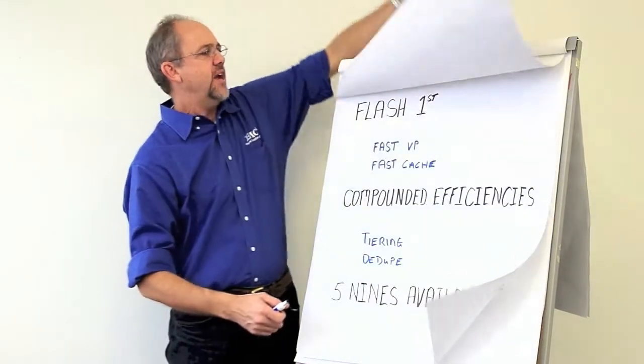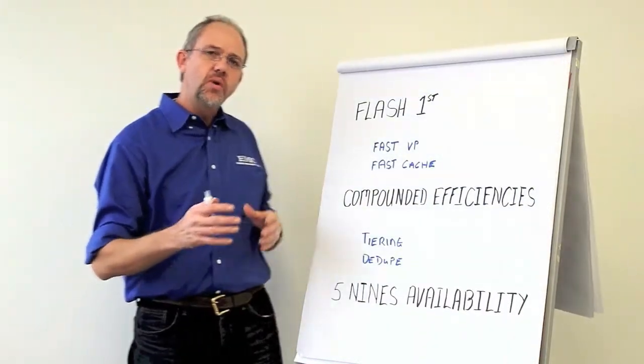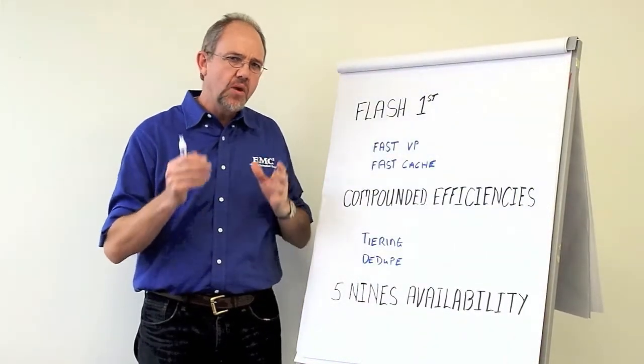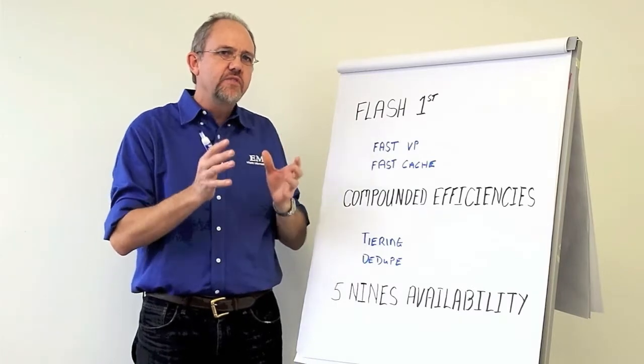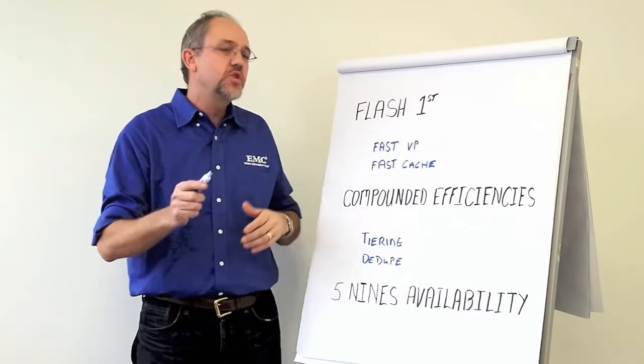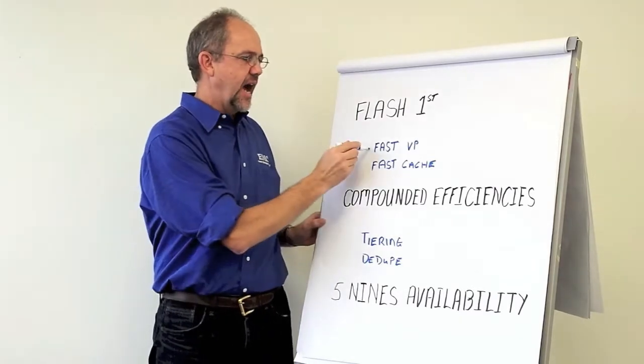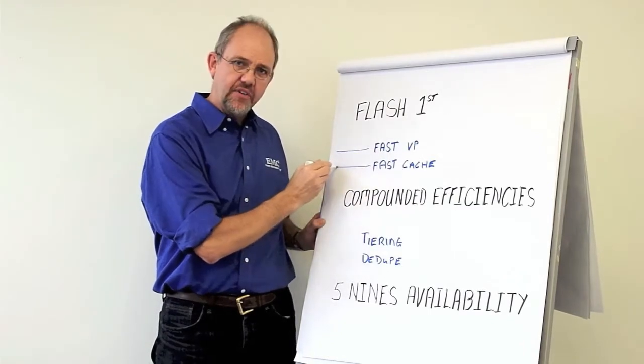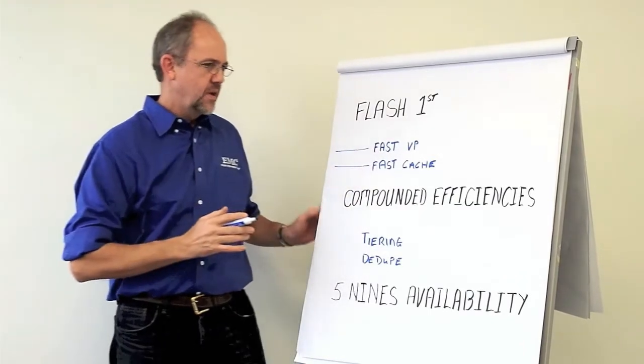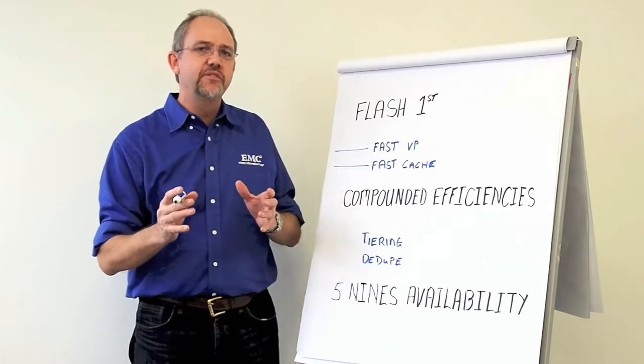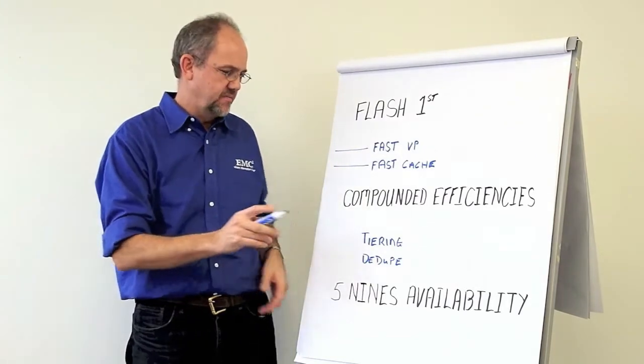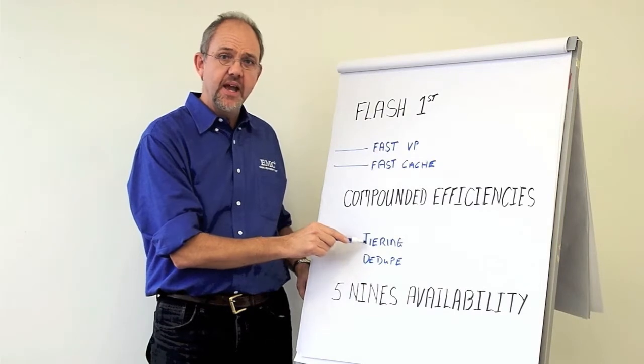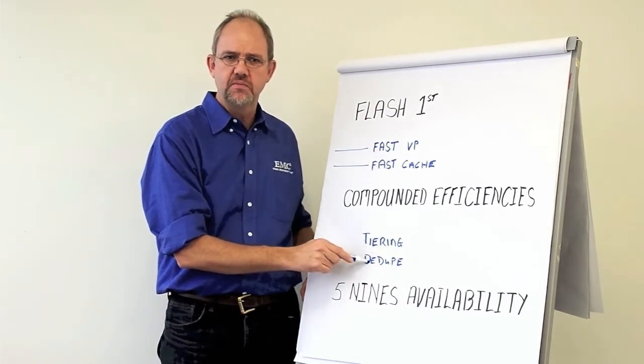That allows us to do what we call our flash first strategy, meaning all your critical data is serviced out of flash. We do this with two main technologies, our FAST VP and our FAST Cache. We also offer compounded efficiencies to bring the overall storage cost down through our tiering as well as through deduplication.